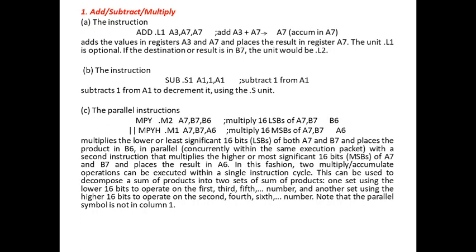The add or subtract or multiply instruction: ADD.L1 A3, A7 comma A7, which adds A3 and A7 and the resultant is stored in A7 — it is accumulated in A7. The unit dot L1 is optional. Among the 8 functional units, the L unit writes to register A and is used for addition operations. If the destination result is in B7, the unit would be L2.